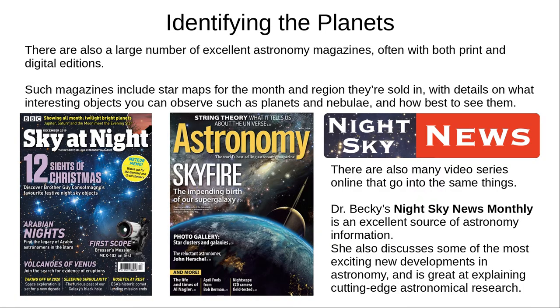There are also many excellent print and digital astronomy magazines. Two of the most popular in the UK are Sky at Night and Astronomy. These include many pages of star charts for the month and region they're sold in, with details on what interesting objects you can observe this month and how best to find them. You can also find a lot of videos online that go into the same kind of things, and I highly recommend Dr Becky's Night Sky News monthly, linked in the description. Dr Becky is enthusiastic and great at explaining cutting-edge astronomical research in easy-to-understand ways.